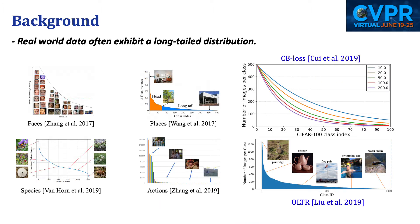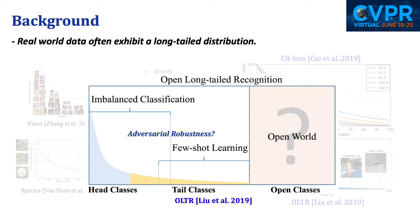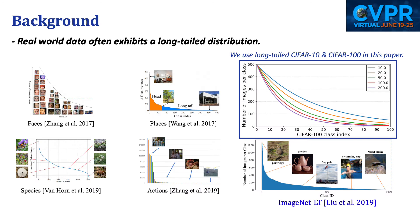However, real-world data are usually not ideally balanced. Instead, they often exhibit a long-tailed distribution. This brings challenges not only to the pure recognition performance, but also to the network robustness against attacks. The former problem has attracted increasing attention recently, while the latter remains largely unexplored, and this is the initial motivation of this project.